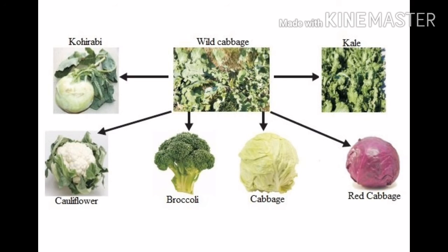Humans have cultivated wild cabbage for more than 2000 years as a food plant and generated different vegetables from it by selection — this is artificial selection. That is, modification of species by selective breeding by man rather than natural selection. Varieties like cauliflower, broccoli, cabbage, red cabbage, kohlrabi, and kale have all evolved from a common ancestor — wild cabbage. These all have evolved from wild cabbage, and artificial selection provides an example of step-by-step or gradual evolution.